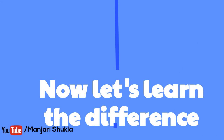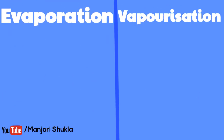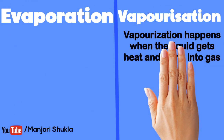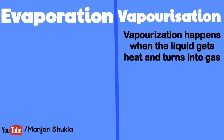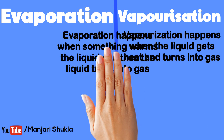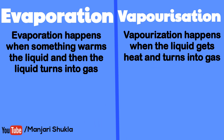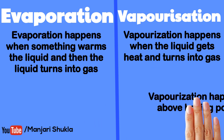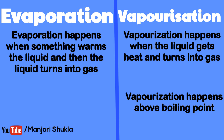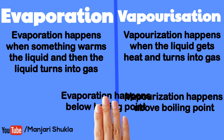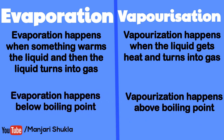Now let's learn the difference. Vaporization happens when the liquid gets heat and turns into gas. Evaporation happens when something warms the liquid and then the liquid changes into gas. Vaporization happens above boiling point. Evaporation happens below boiling point.